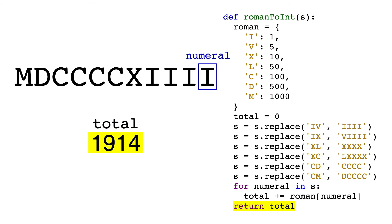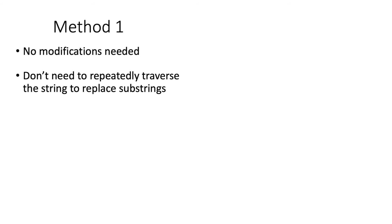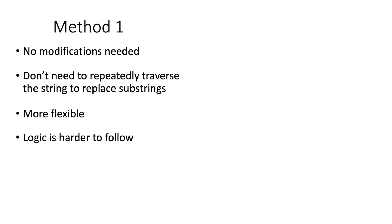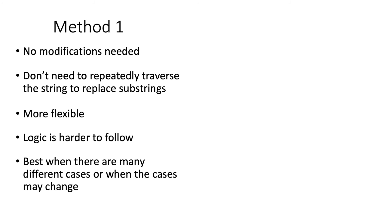Notice that we got the same answer as the other method. Now let's compare the pros and cons of both methods. For the first method, one of the pros was that we didn't have to modify the input string at all, and we didn't have to traverse the string over and over again to replace substrings. This method also incorporated the logic of Roman numerals into the algorithm, so it's more flexible. The main drawback is that the logic is a bit harder to follow — we had an if-else statement nested inside a for loop, and you have to figure out when to subtract and add, so it's less interpretable. This approach shines best when there are many different cases, or the cases may change in the future. For example, if instead of 6 cases there were 100 different cases, the code wouldn't have to change at all since the logic is already incorporated — but using the second method, you'd have to manually write out all 100 cases.